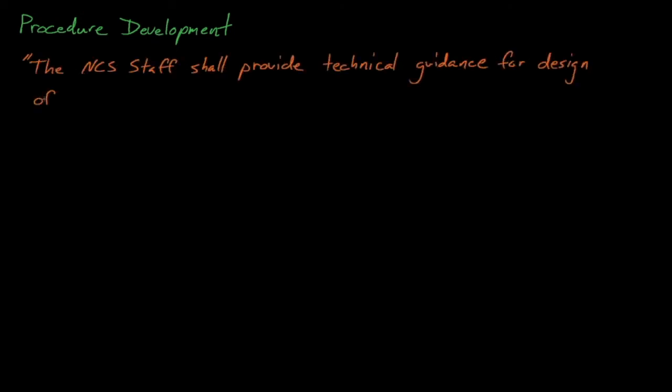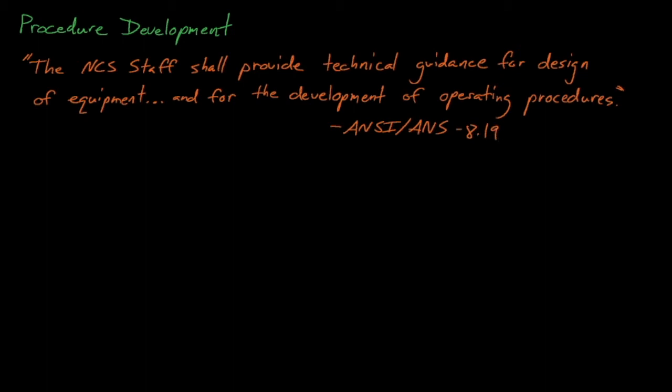ANSI ANS 8.19 also states that the nuclear criticality safety staff shall provide technical guidance for the design of equipment and for the development of operating procedures, so we must assist operations in developing procedures. And this process is actually fairly formal and fairly well scrutinized.